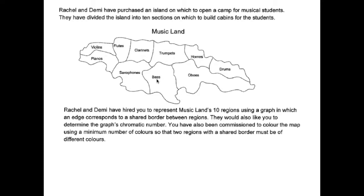clarinet section, saxophones, trumpets, bass section, horn section, oboe section, and drum section. Rachel and Demi have hired you to represent Musicland's 10 regions using a graph in which an edge corresponds to a shared border between regions. They would also like you to determine the graph's chromatic number.